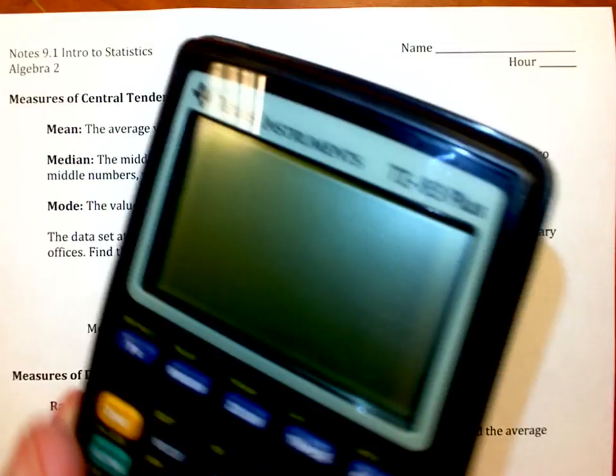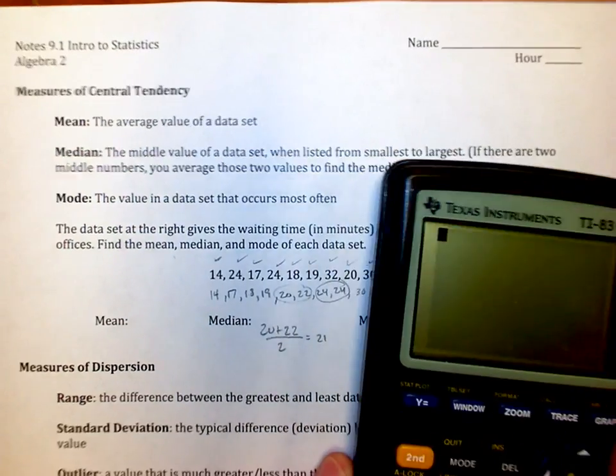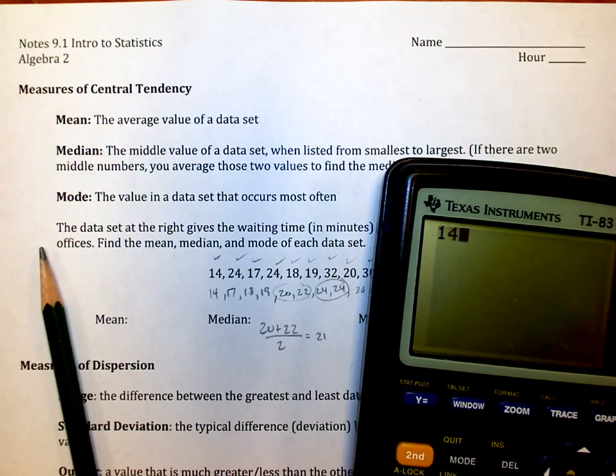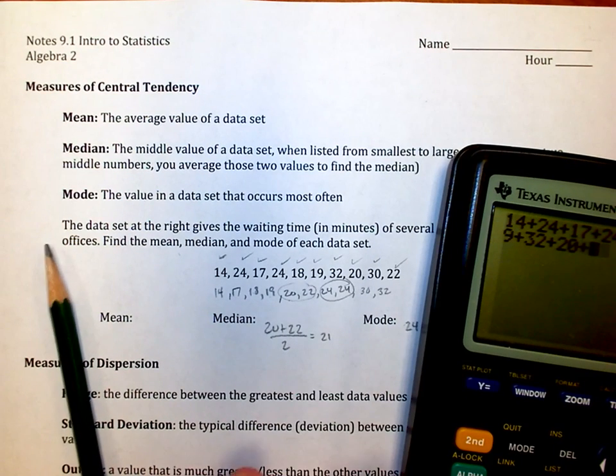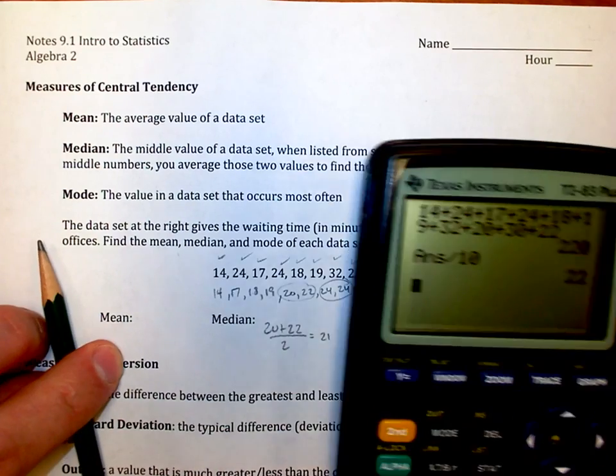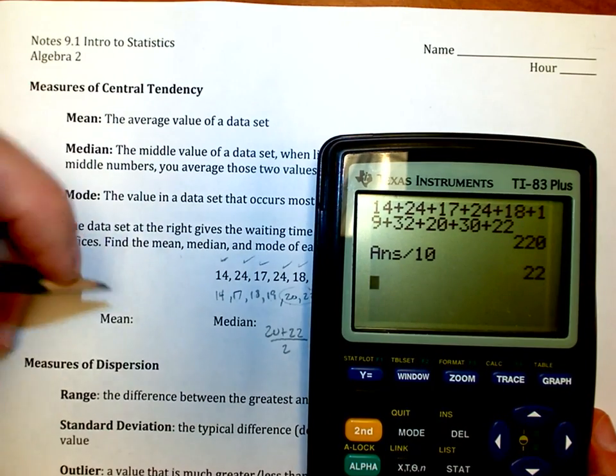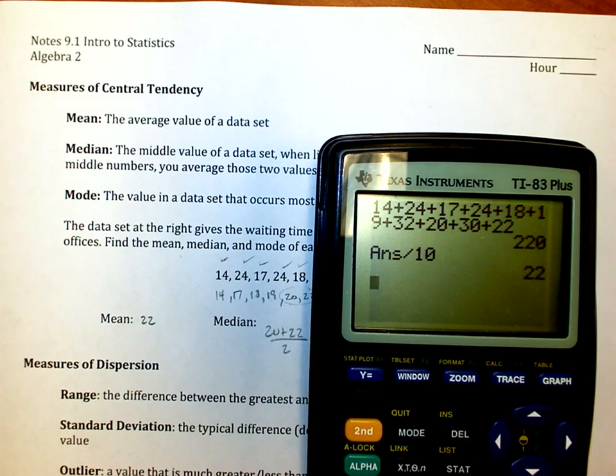I should add them up and find out what they average out to. So 14 plus 24 plus 17 plus 24, 18, 19, 32, 20, 30, and 22. Add them up and divide by 10. And it turns out that the mean is 22. Pretty simple stuff, right? Let's go through and figure out how to do this on the graphic calculator instead.